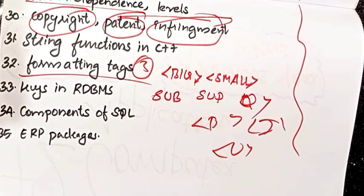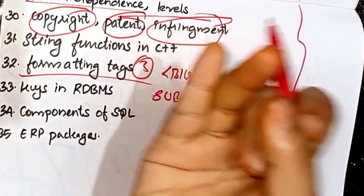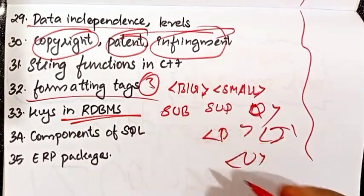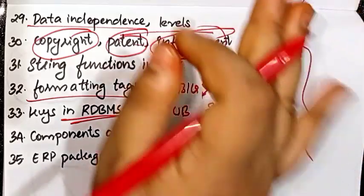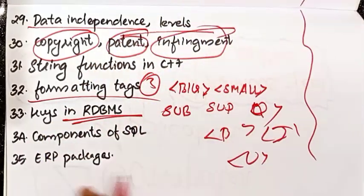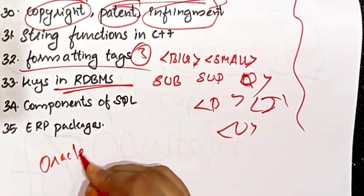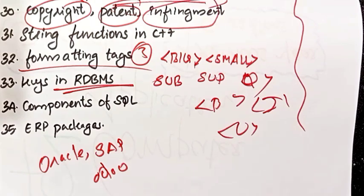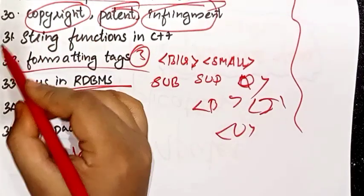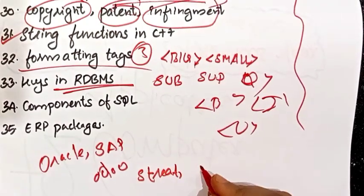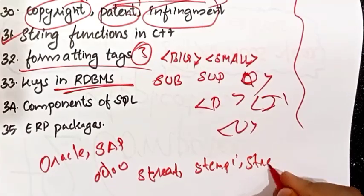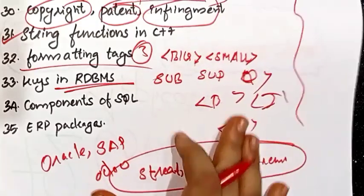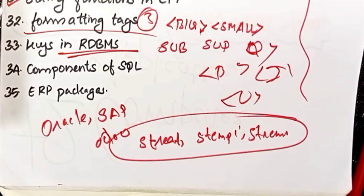The keys used in RDBMS. Components of SQL are DML, DDL, DCL. Why are you using RDBMS? Oracle, SAP. String functions in C++ used in RDBMS: STREAT, STRCPMI, STRCPM — these functions will be uploaded separately, and many functions may be confusing so we will do separate videos.